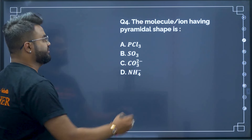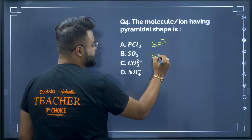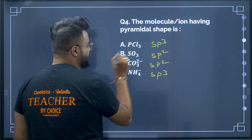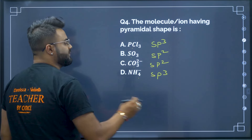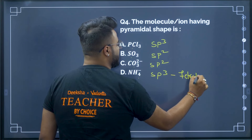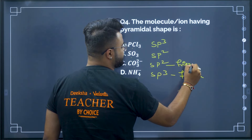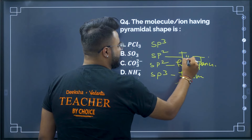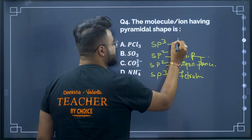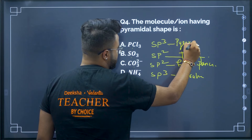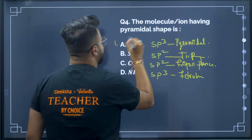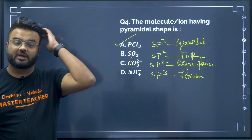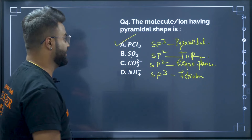Question 4: Which molecule or ion has a pyramidal shape? Ammonium ion is sp³ — tetrahedral. Carbonate ion is sp² — trigonal planar. Sulfur trioxide is sp² — trigonal planar. Phosphorus trichloride is sp³ — trigonal pyramidal in shape. Therefore phosphorus trichloride is your correct answer. This is from the chemical bonding chapter — they do ask questions from it.